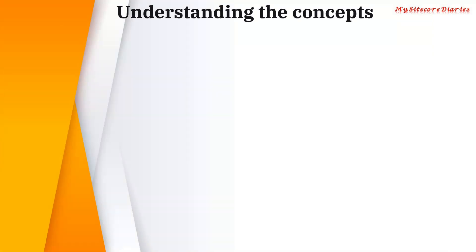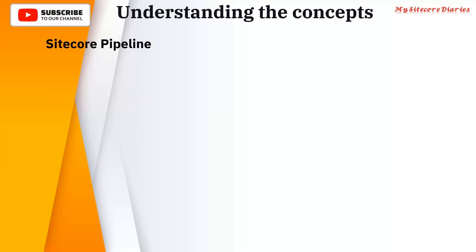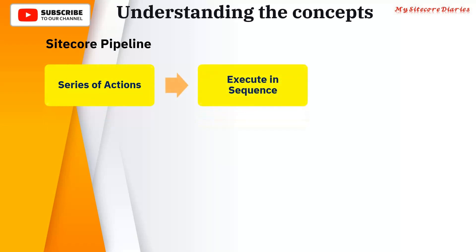Let's understand the concept of a pipeline. What is a Sitecore Pipeline? It is a series of actions which execute in sequence to achieve an objective. There are a number of actions which get executed in sequence to achieve something — that is called a pipeline.